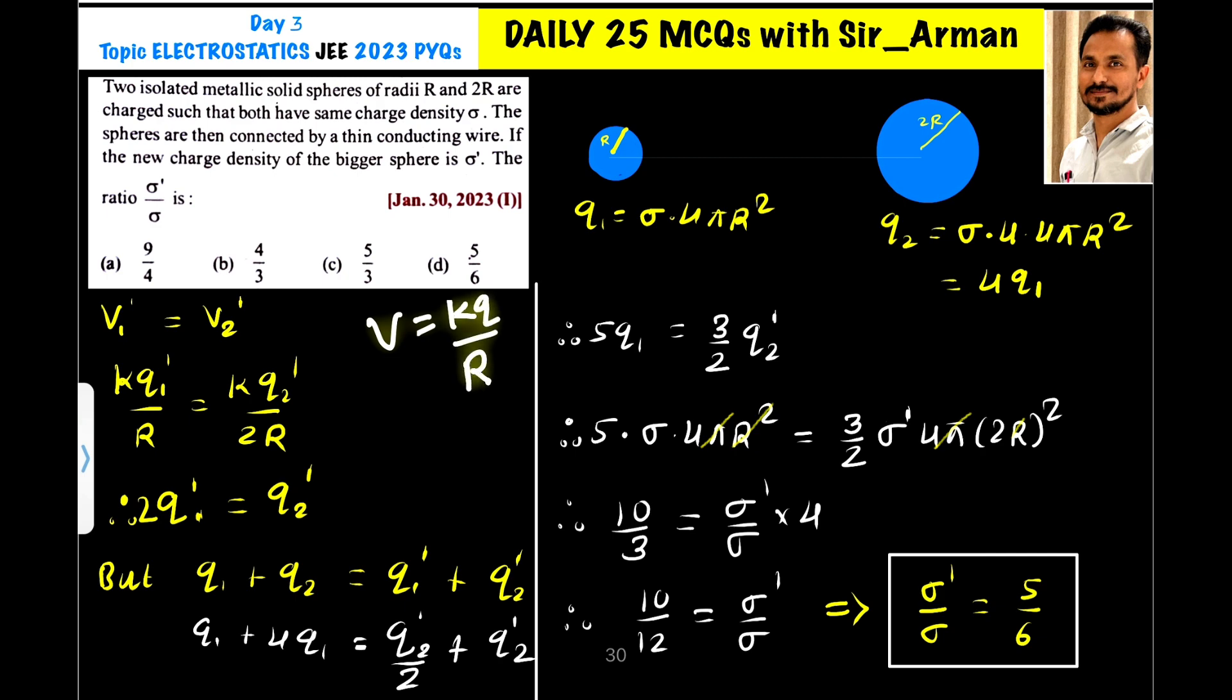Here the charge is changed because the charge is transferred from one sphere to another sphere. So kq1 dash by r1. Similarly, kq2 dash by 2r because the radius of the other sphere is 2r.